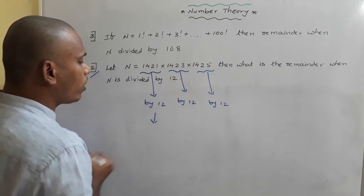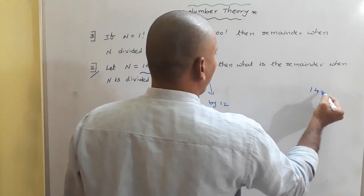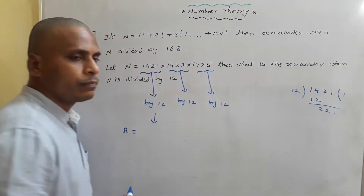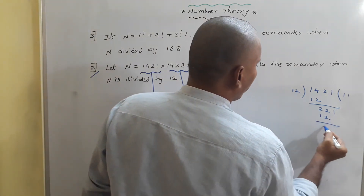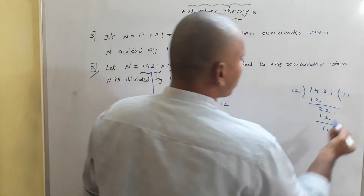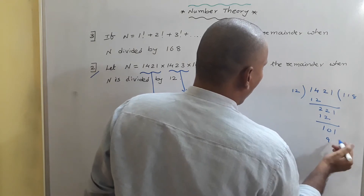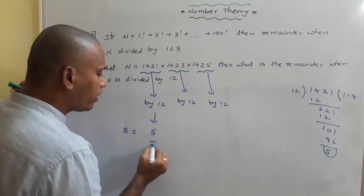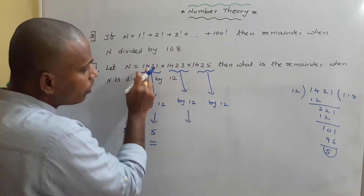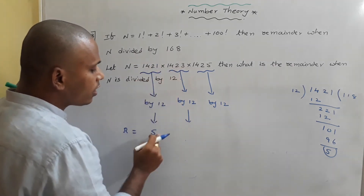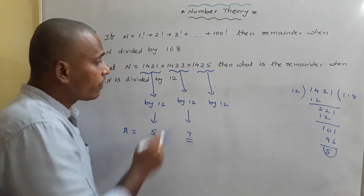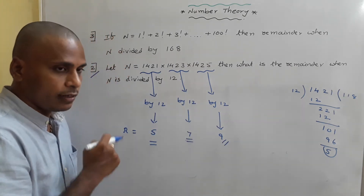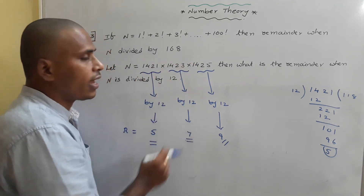When 1421 is divided by 12: 12 × 118 = 1416, so the remainder is 5. Since 1423 and 1421 differ by 2, the remainder this time is 7. And 1425 differs by another 2; when you divide 1425 by 12, the remainder is 9. So individually, the remainders are 5, 7, and 9.